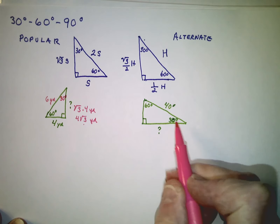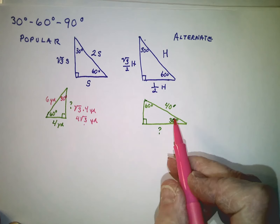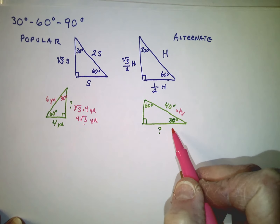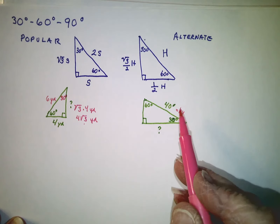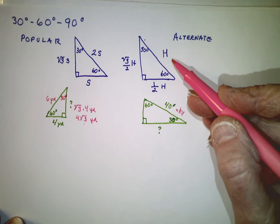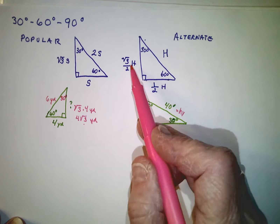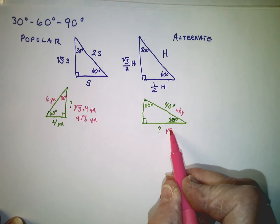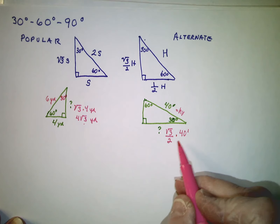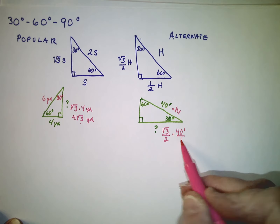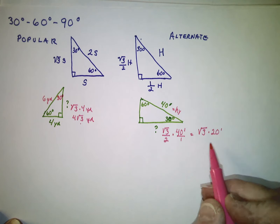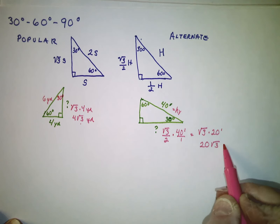In this problem we still have a 30-60-90 degree triangle, but this time we know the hypotenuse is 40 feet. So rather than working with the short-side representation, it's easier to use the formula based on the hypotenuse. The side across from the 60-degree angle is the square root of 3 over 2 times the hypotenuse. Since 2 and 40 share a common factor, this simplifies to the square root of 3 times 20 feet, or 20 times the square root of 3 feet.